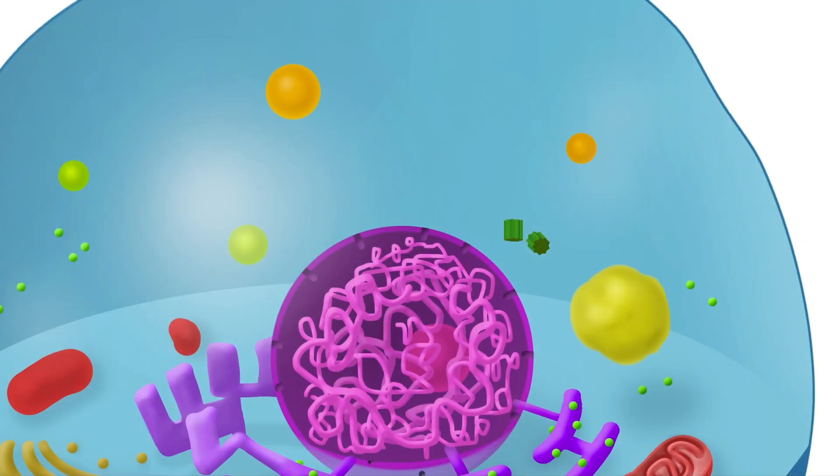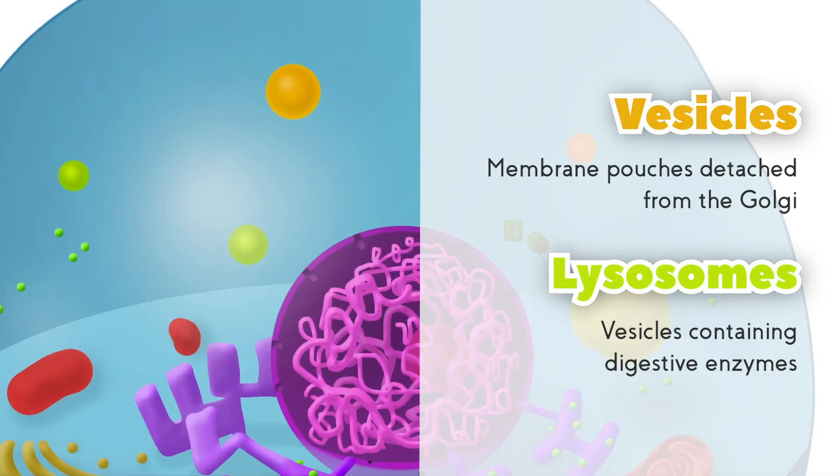The Golgi apparatus is also responsible for making vesicles, small pouches of membrane that detach from it. Some special vesicles, called lysosomes, contain digestive enzymes and therefore are responsible for cellular digestion.